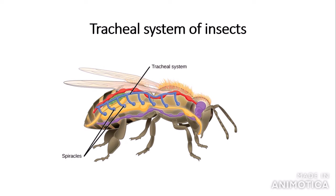You need to know about the tracheal system of insects. Insects don't actually have lungs — they have a tracheal system made up of the trachea, tracheoles which are branches, and also spiracles, which appear as little holes on the side of the insect. Spiracles are very important as these are where the insect breathes — oxygen enters and carbon dioxide diffuses out through the spiracles.